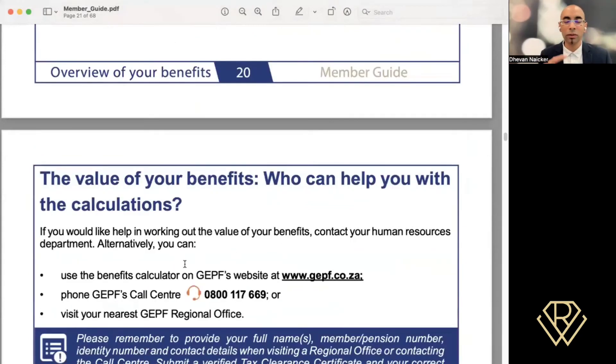So a simpler way in order for you to get your benefits is reaching out to GEPF. They do have a calculator on their website. You can also register yourself to create an account so you can access it. Or you could phone GEPF call center, or even send them an email so that you can request the latest benefit statement. But this is how the benefit statement itself is done.